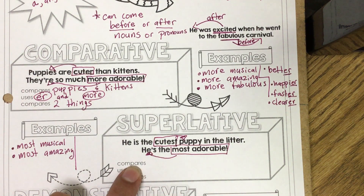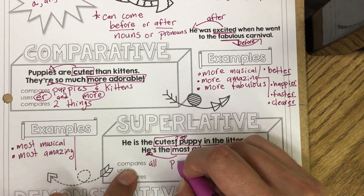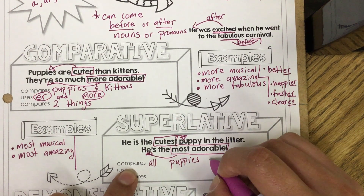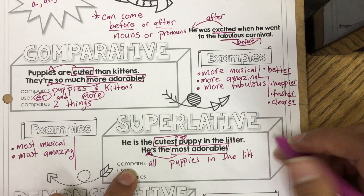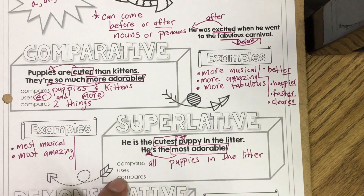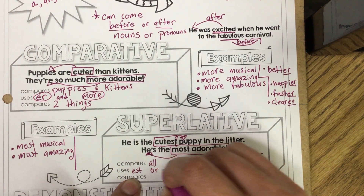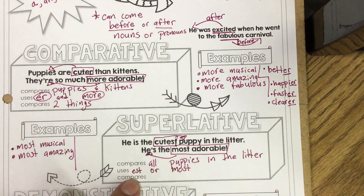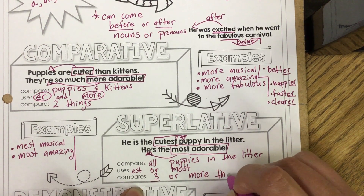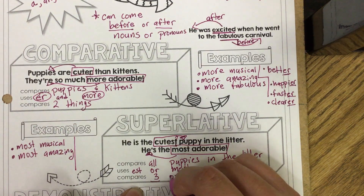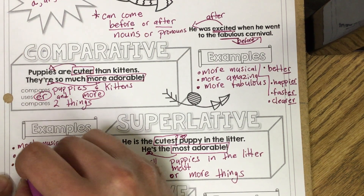In this example: He is the cutest puppy in the litter — he's the most adorable. It's comparing all puppies. Write this with me. Everything I write, you should write as well. It compares all puppies in the litter, using the suffix -est or the word 'most,' and it compares three or more things. Our examples are most musical, most amazing, and most fabulous.